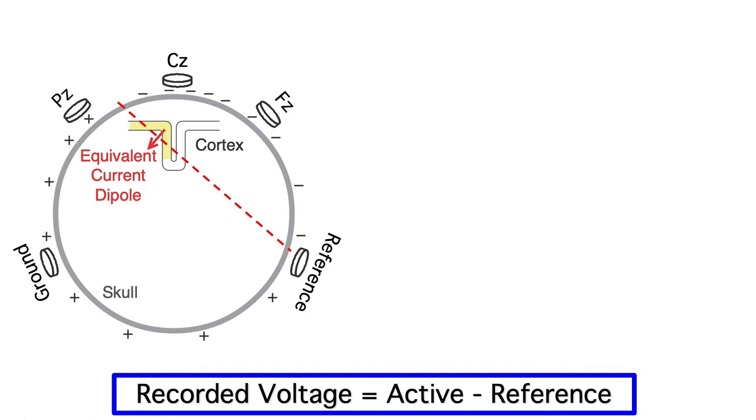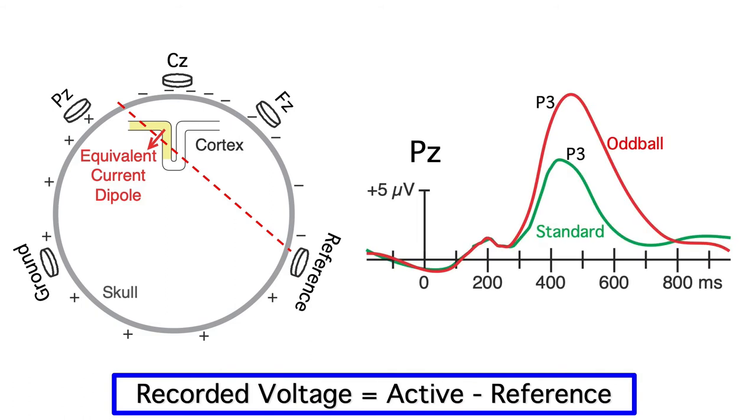The key is to always remember that the active and reference electrodes are equal partners in determining the voltage that we record. So when you see a channel labeled PZ, you're not just looking at the activity from the PZ electrode. You're looking at PZ minus the signal at the reference electrode.